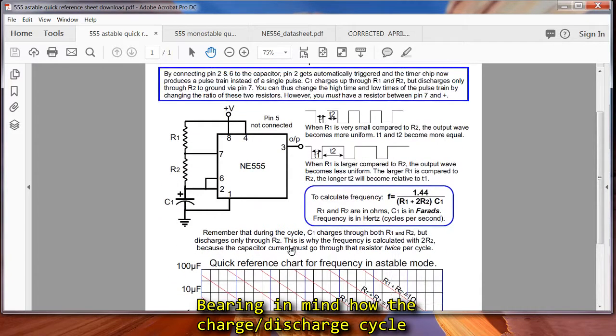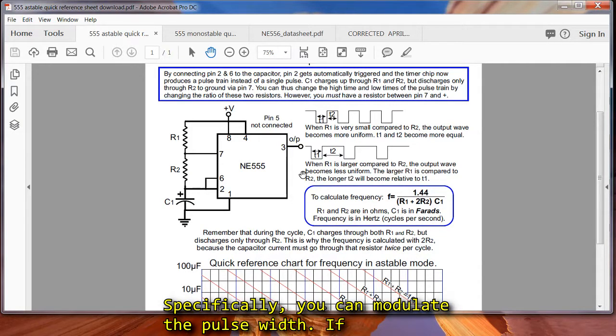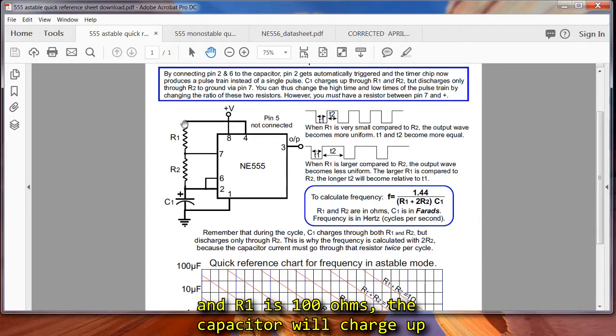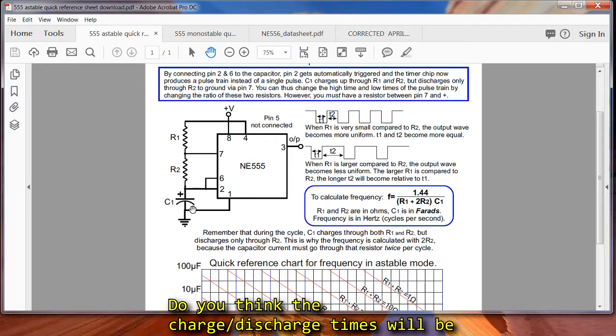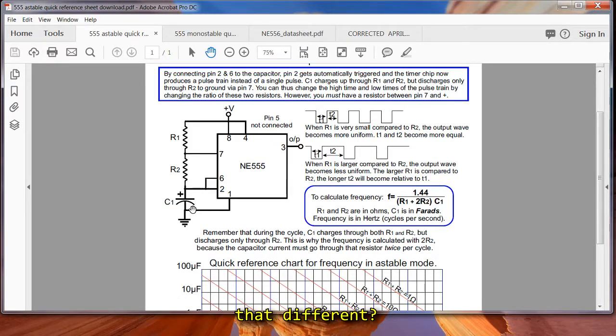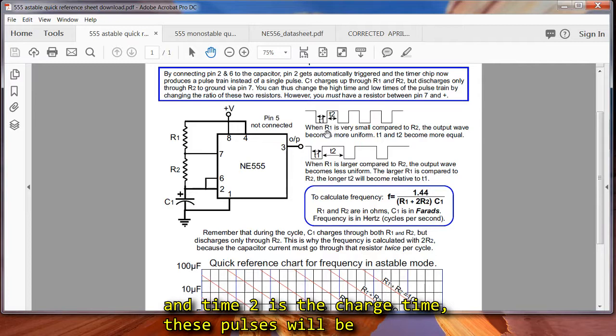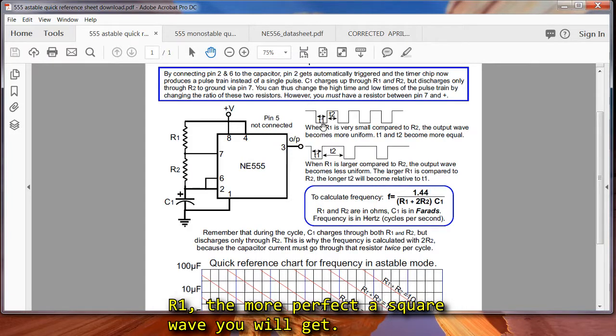So bearing in mind how the charge-discharge cycle works relative to the output wave, gives you an opportunity to customize the output waveform. Specifically, you can modulate the pulse width. If I make R2 really big compared to R1, say R2 is 10k and R1 is 100 ohms, the capacitor will charge up through 10,100 ohms, and will discharge through 10,000 ohms. Do you think the charge-discharge times will be that different? Of course not. The two times will be within 1% of each other. The larger R2 is compared to R1, the more perfect a square wave you will get.